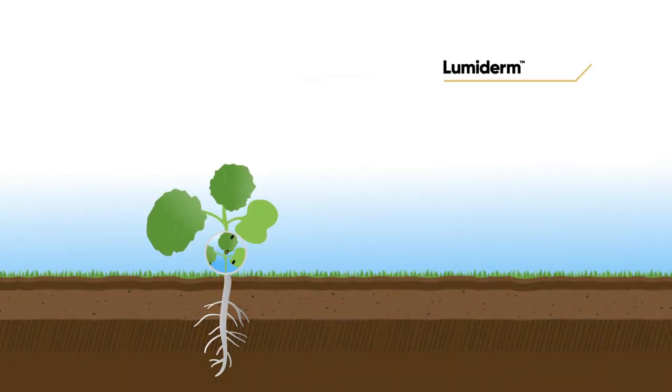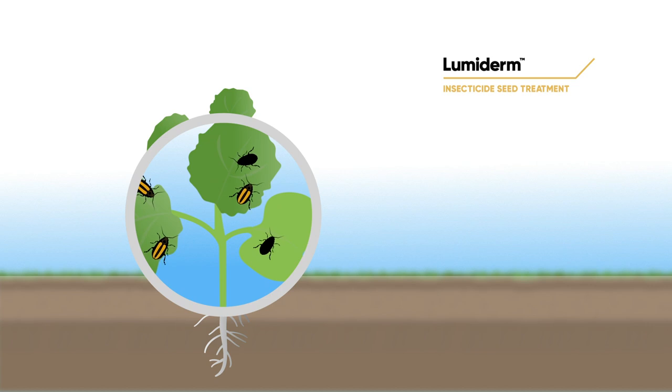Lumaderm protects canola against crucifer and striped flea beetles and delivers superior control of early-season cutworms to ensure increased plant vigor and biomass.